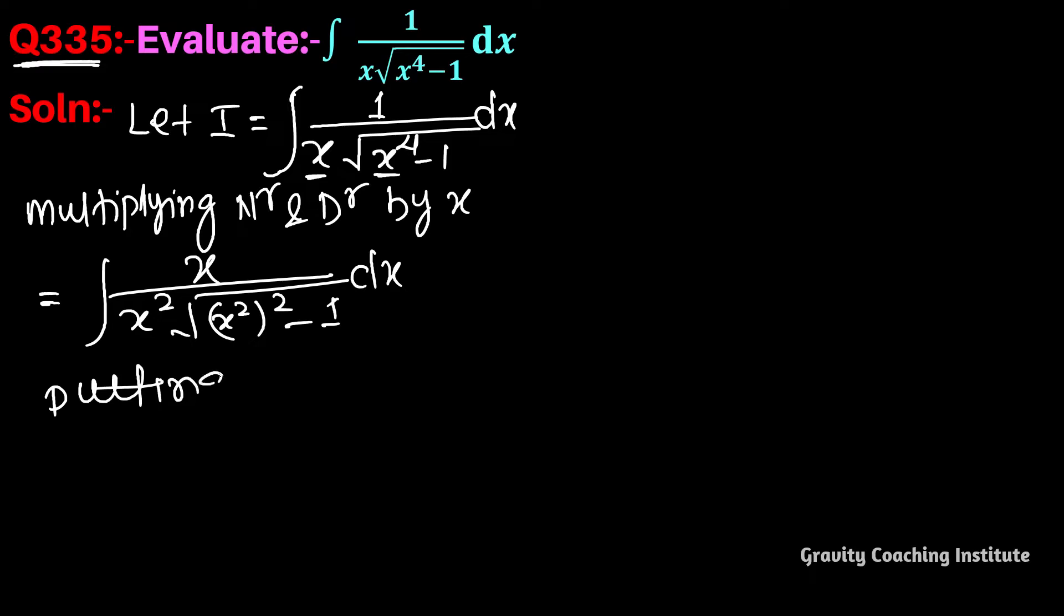Now putting x squared equal to t, and now differentiate with respect to x. x squared gives 2x dx, which equals dt. So we take 2 out to balance, leaving half.